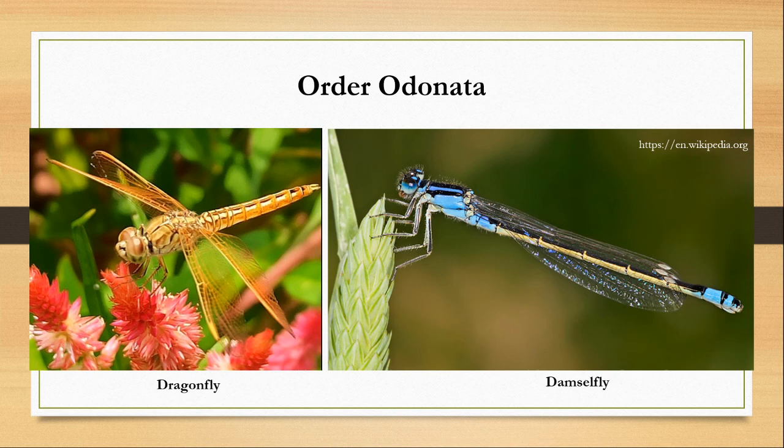Hello and welcome to my class. In this video, I am going to discuss the salient features and examples of order Odonata, which includes the dragonflies and the damselflies.